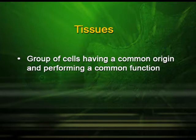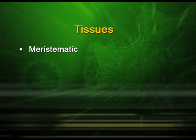Cell is the structural unit of life. When these cells aggregate, they form tissue. A group of cells having a common origin and performing a definite function is called tissue. Tissues in plants are categorized mainly into two types: the meristematic and the permanent tissues.